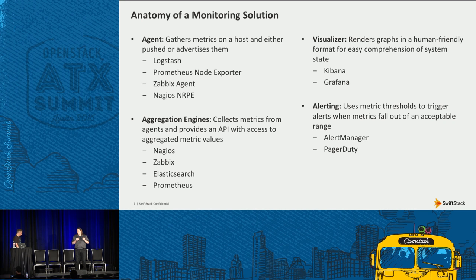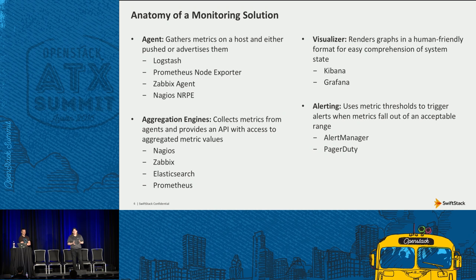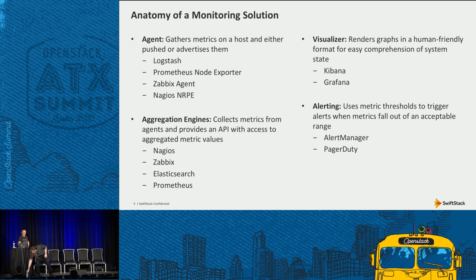The aggregation engine takes all the metrics from all different servers, bringing them together into a common place — usually a time series database — and makes that available to the visualizer. It can do things like linear regressions for a more enhanced experience. The visualizer allows you to define graphs and visual elements so a human can see trends or anomalies in the data really quickly, instead of just a long list of numbers or log lines.